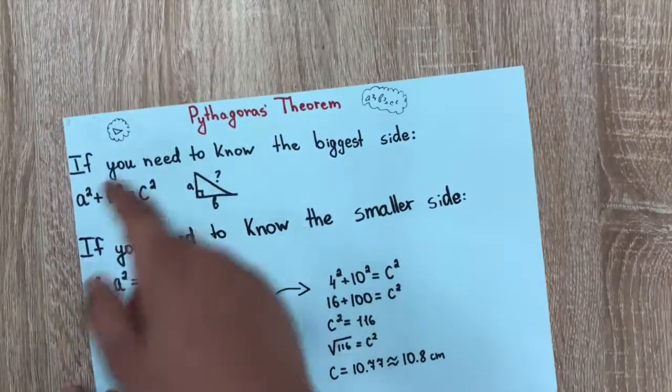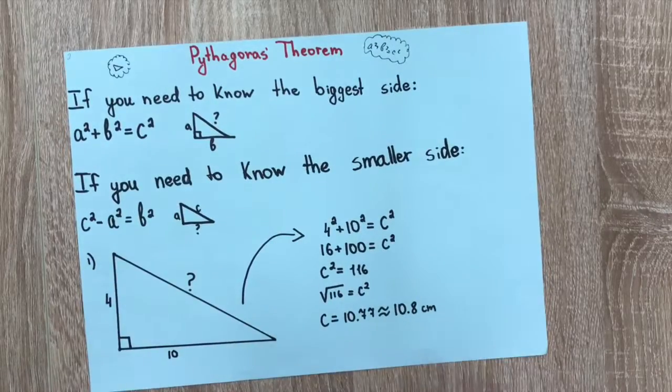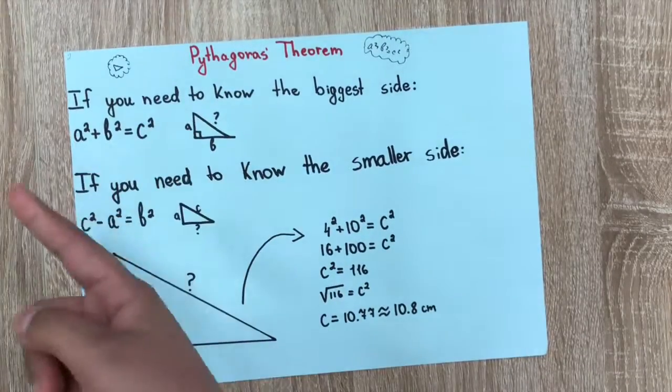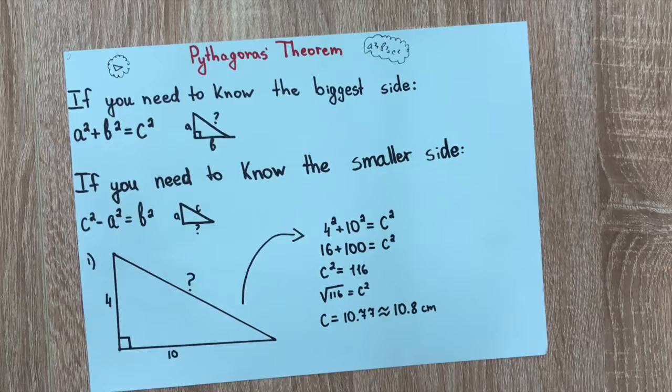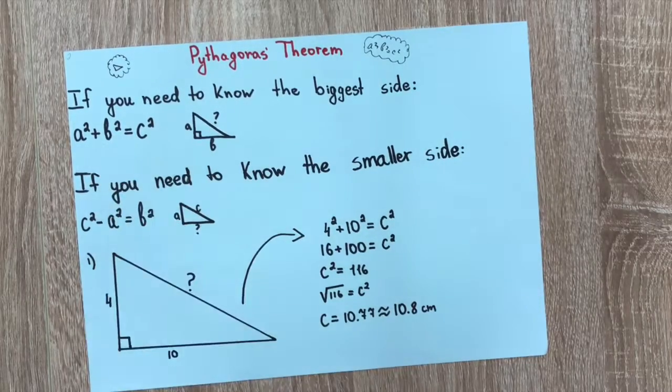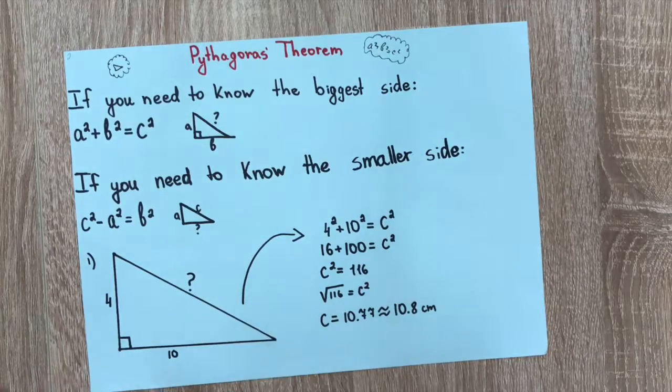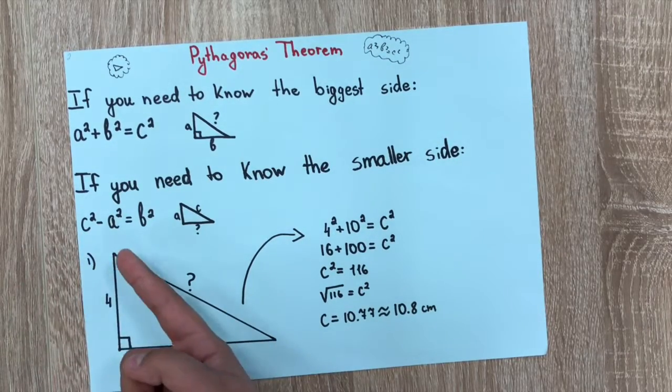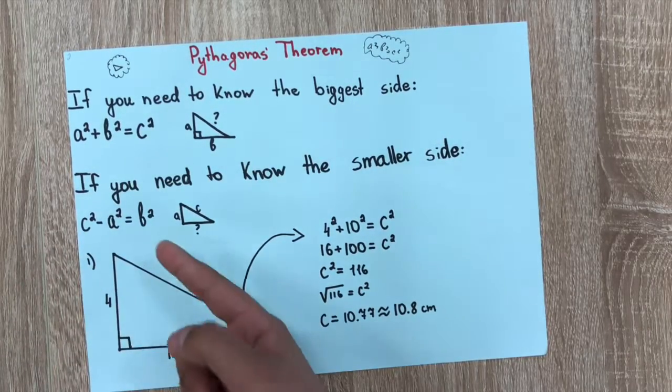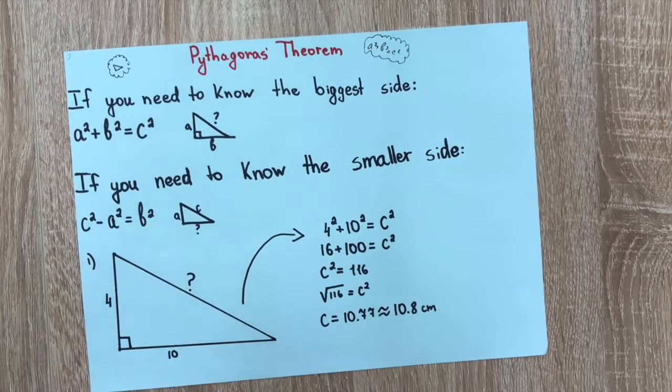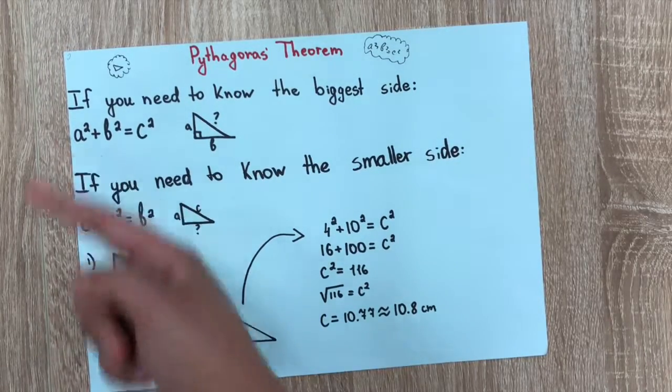Pythagoras theorem, we have some examples here. If you need to know the bigger side: a² + b² = c². If you need to know the smaller side: c² - a² = b². As you can see, the smaller side is minus, the bigger side is plus.